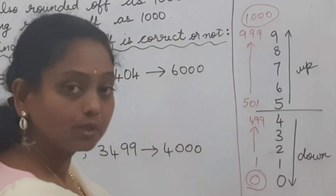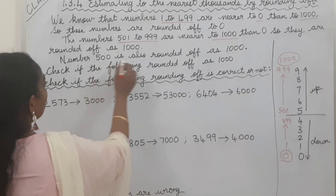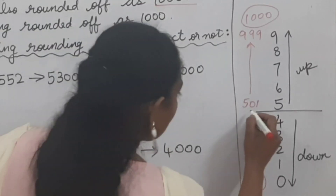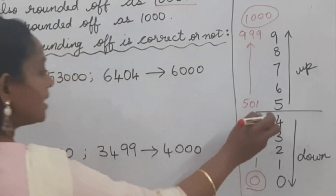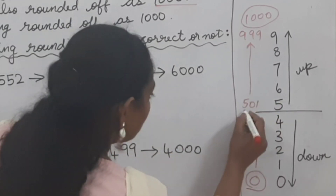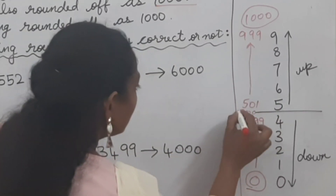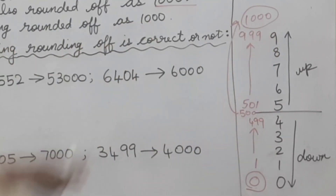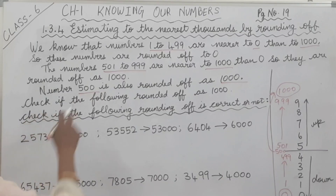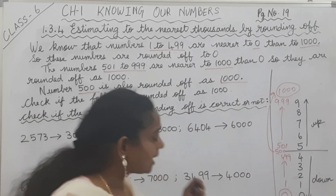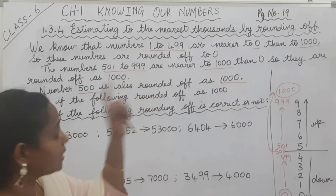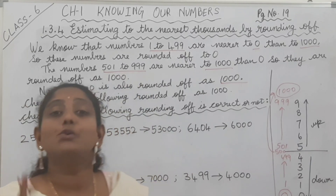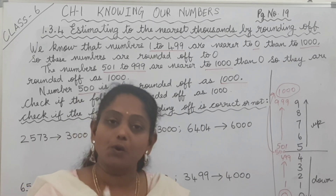Number 500 is also rounded off to one thousand. So when rounding off to nearest thousands, which digit do you have to see? You have to see the hundreds place - the hundreds place value.